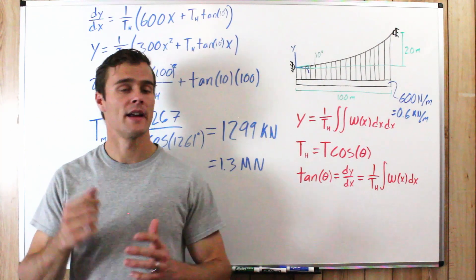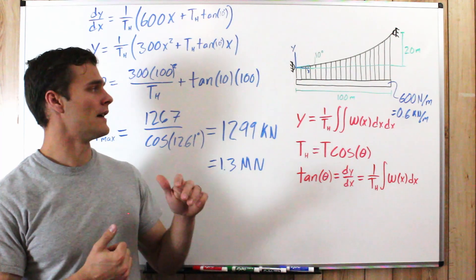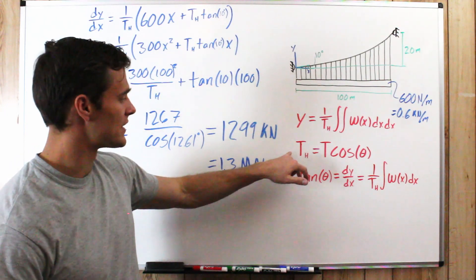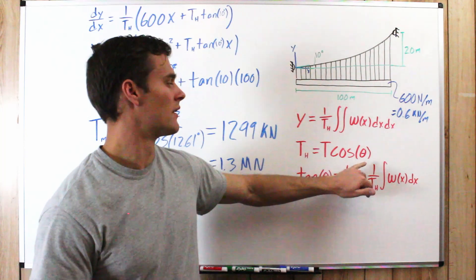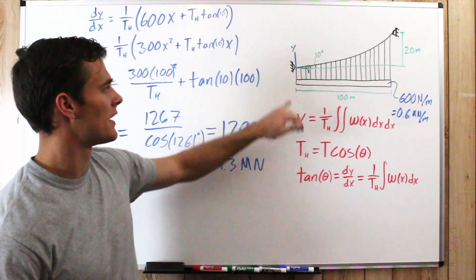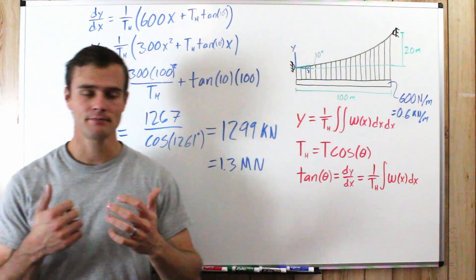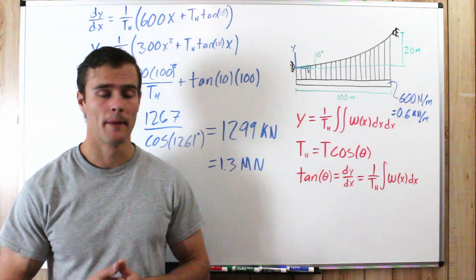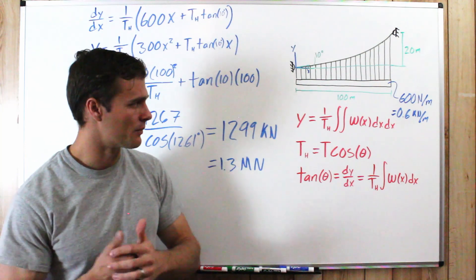That is how you solve for the maximum tension in a cable. If you wanted to solve for the minimum tension, you could use the same tension equation, plugging in 10 degrees for theta and the horizontal component of tension, which would give the tension at the lower end. There are many other quantities you could solve for using these equations.